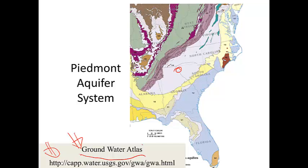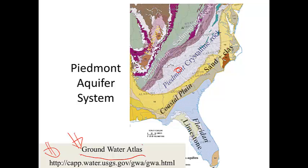The Piedmont Aquifer System occupies this region here. If you move toward the coast, you get into the coastal plain. If you go inland, you go across the Appalachians and then into the Appalachian Basin, and you get into some limestones. Mammoth Cave is right about here in this purple Mississippian limestone.